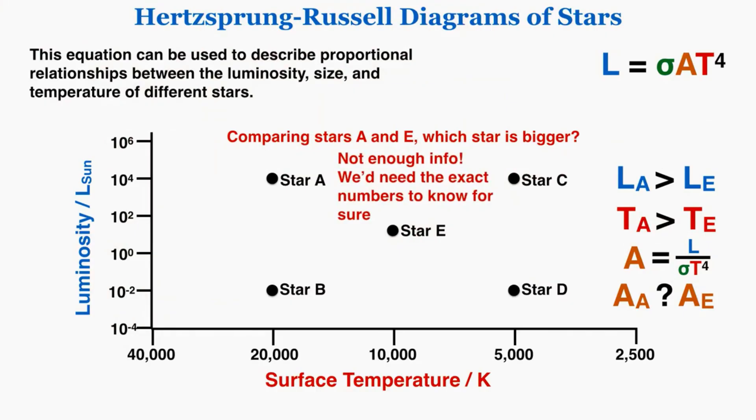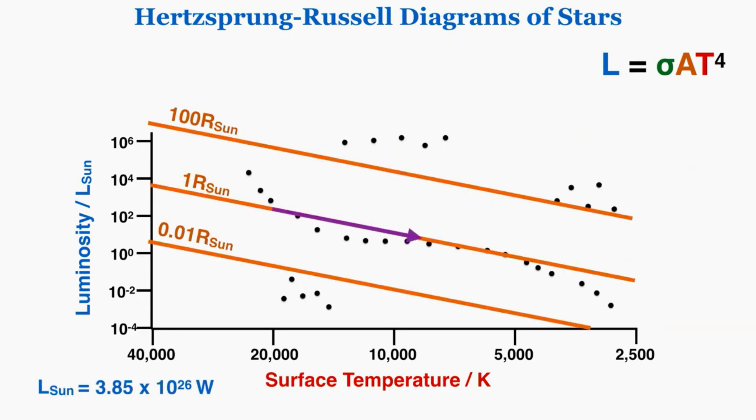We need the exact numbers to know for sure which star is bigger than the other star. This also makes sense because if we think about going diagonally down the graph, I have no way of being sure exactly where that line of constant radius is unless I have specific numbers. I don't know if by going diagonally down I've gone below the radius where I was on before or above the radius where I was on before. Both of those lines point down, so unless I have exact numbers I can't just say that going diagonally and down means one thing or the other.